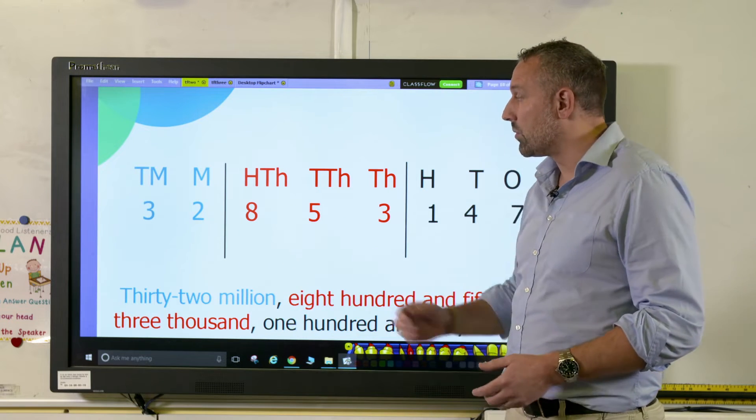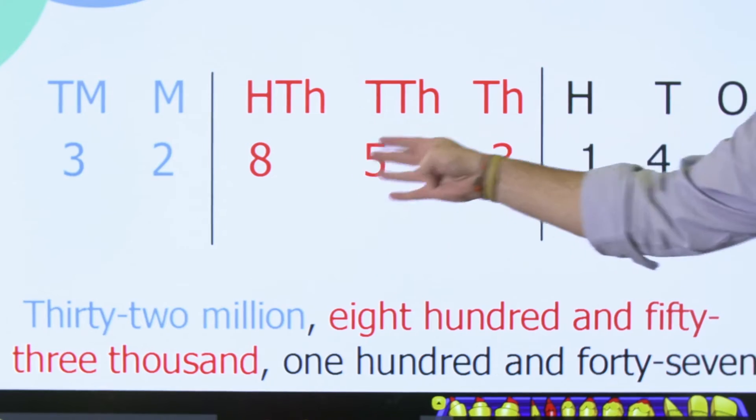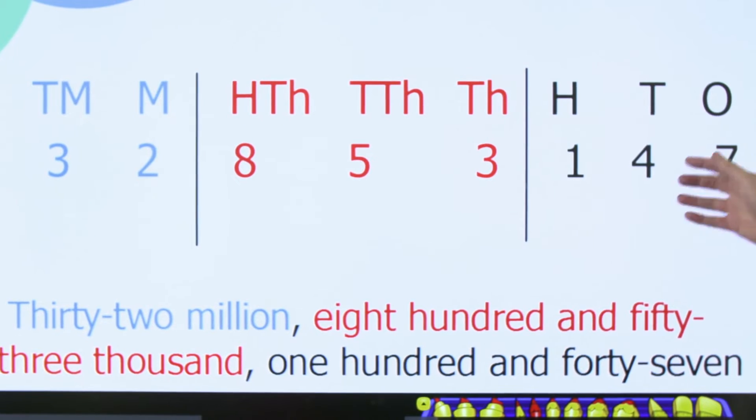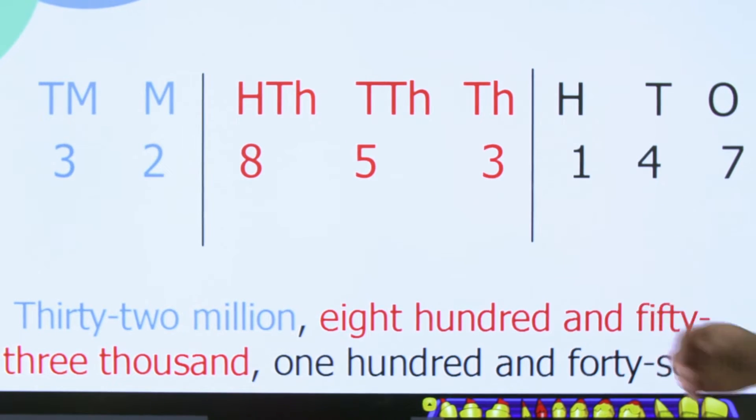So now onto a larger number. We're now dealing with 32,853,147, and you can hear the distinct families that play there and the commas in the right place too.